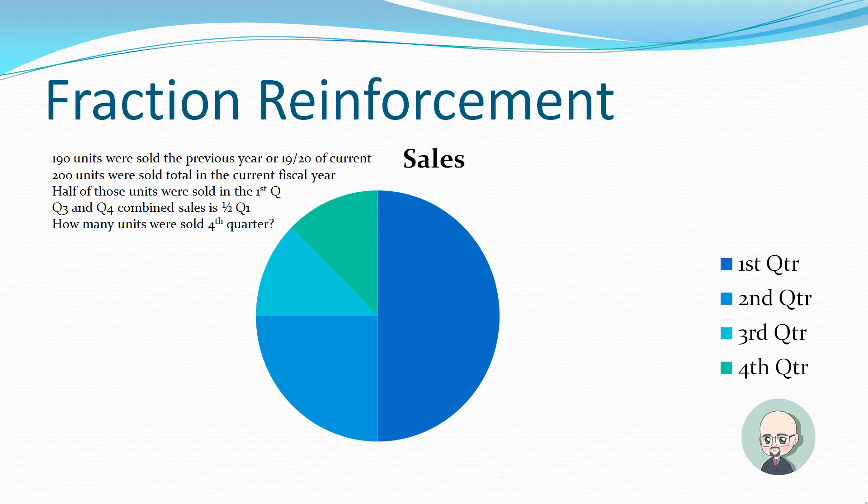Here's a fraction reinforcement exercise. 190 units were sold the previous year or 19 20th of current sales. 200 units were sold total in the current fiscal year. Half of those units were sold in the first quarter. Quarter 3 and quarter 4 combined sales is one half of quarter 1. How many units were sold in the fourth quarter? I want you to look at that pie graph and solve that problem. You can pause the video by pressing the space bar and I'll give you a moment to do that. And then I'll go on to the next slide, but please pause the presentation so you can take time out to give this a shot. And then I'll show you the answer on the following slide.